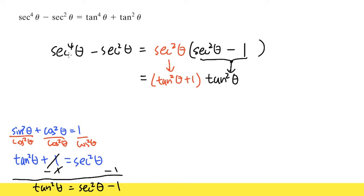You should definitely remember sine squared theta plus cosine squared theta equals one, and then you can divide or multiply to get the desired sine and cosine converted to secant or tangent like this. Now I'm not done yet — at the end, we need to distribute, and once we distribute, you'll see what the answer is.